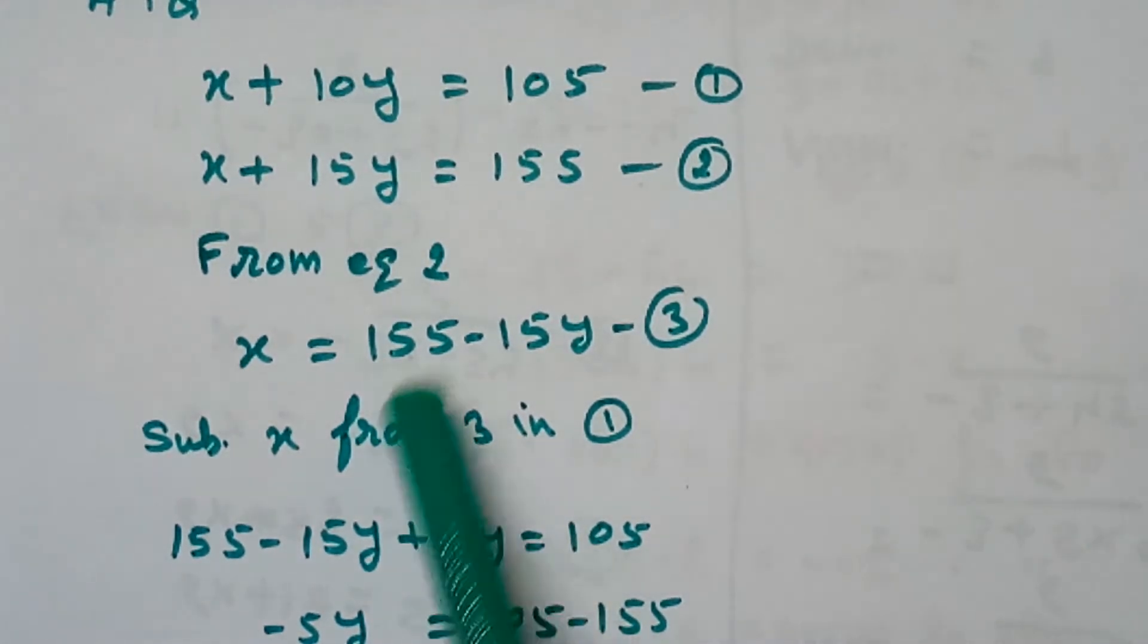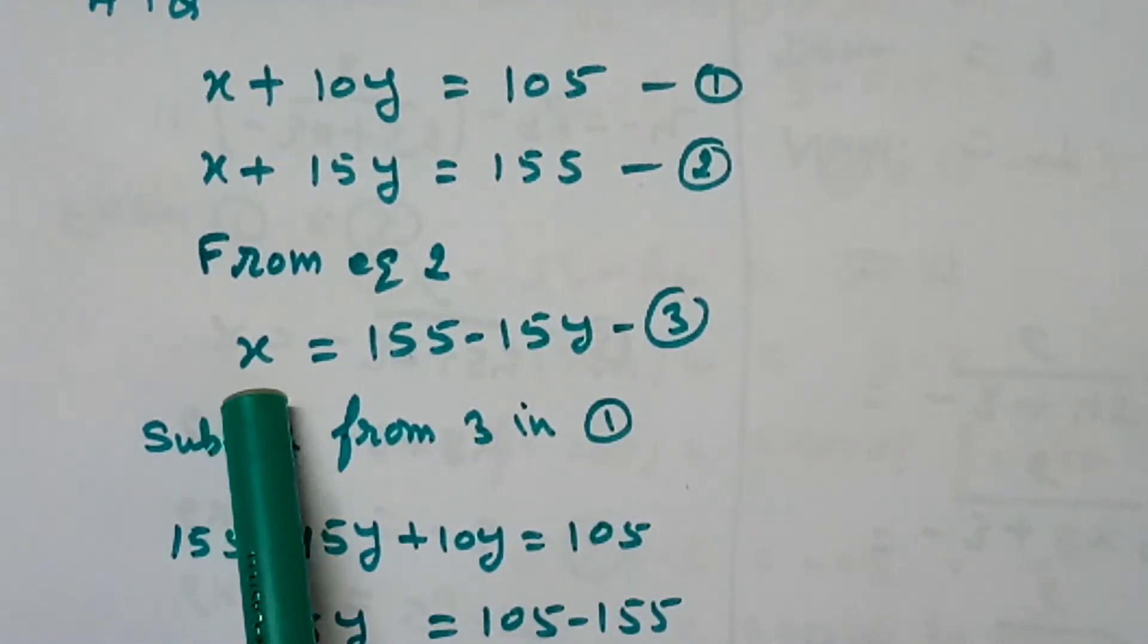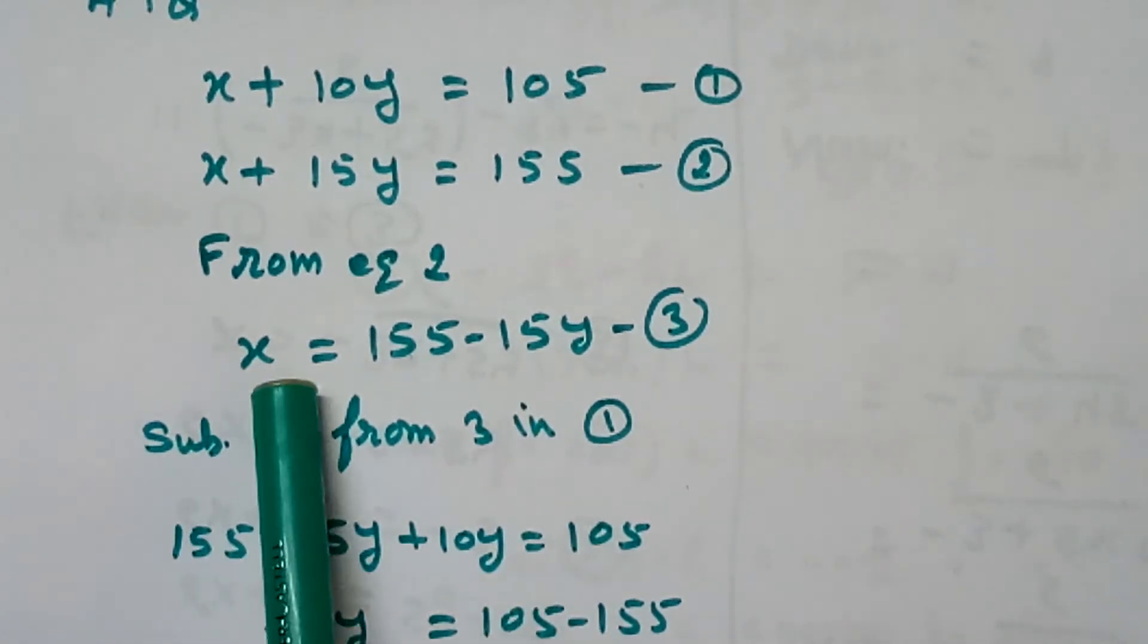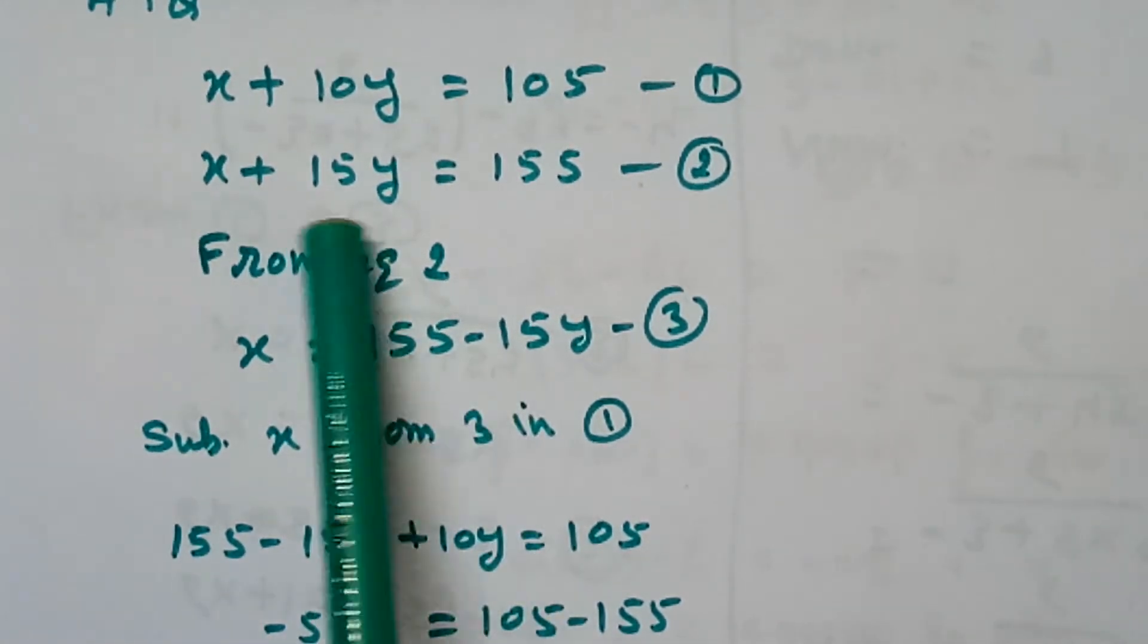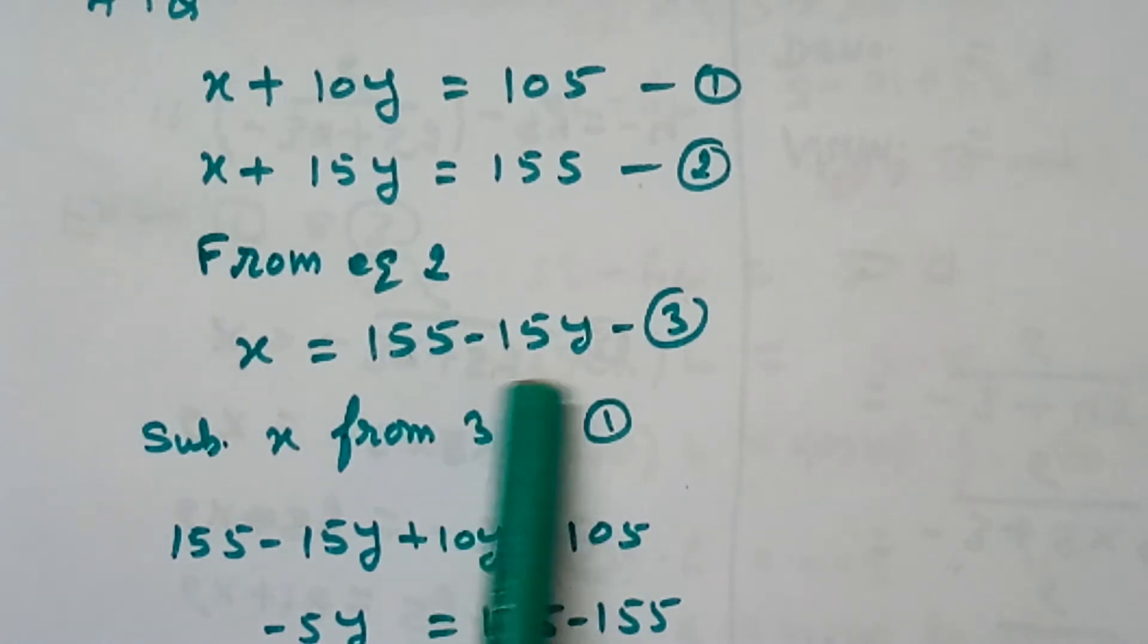Now, from equation 2, we have calculate the value of x in the form of y. x equals to 155 minus this 15y will go this side, minus 15y.